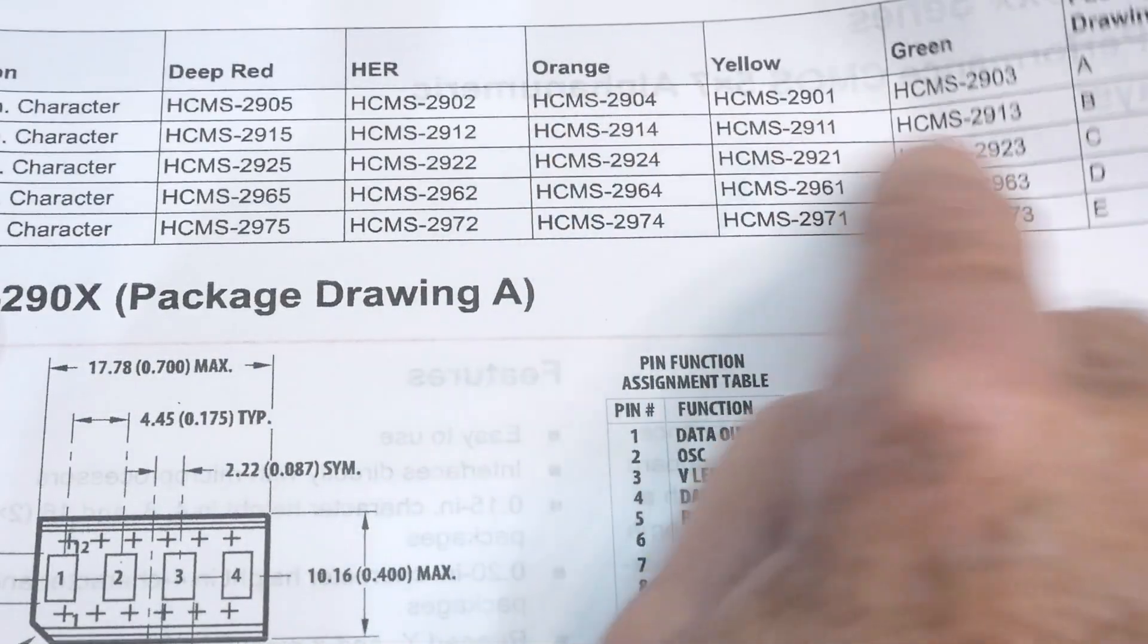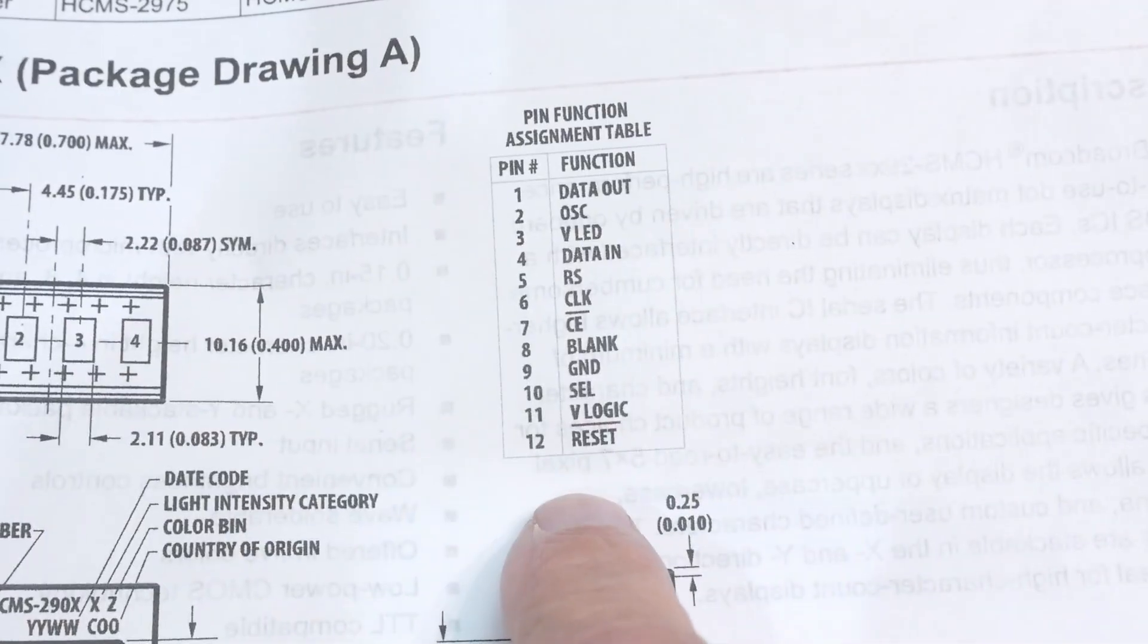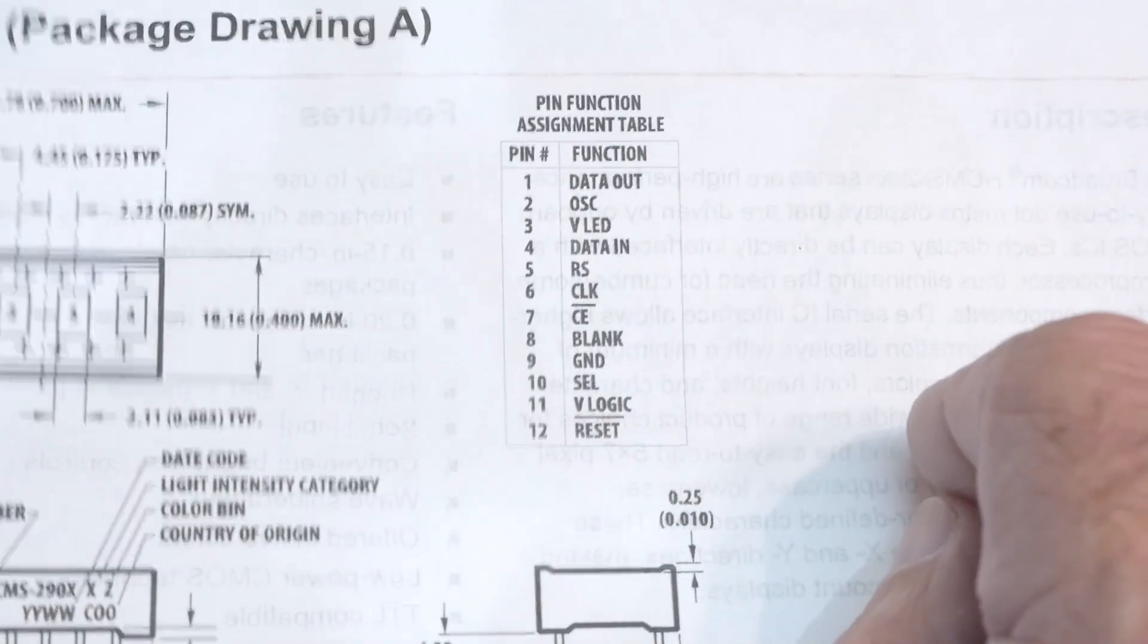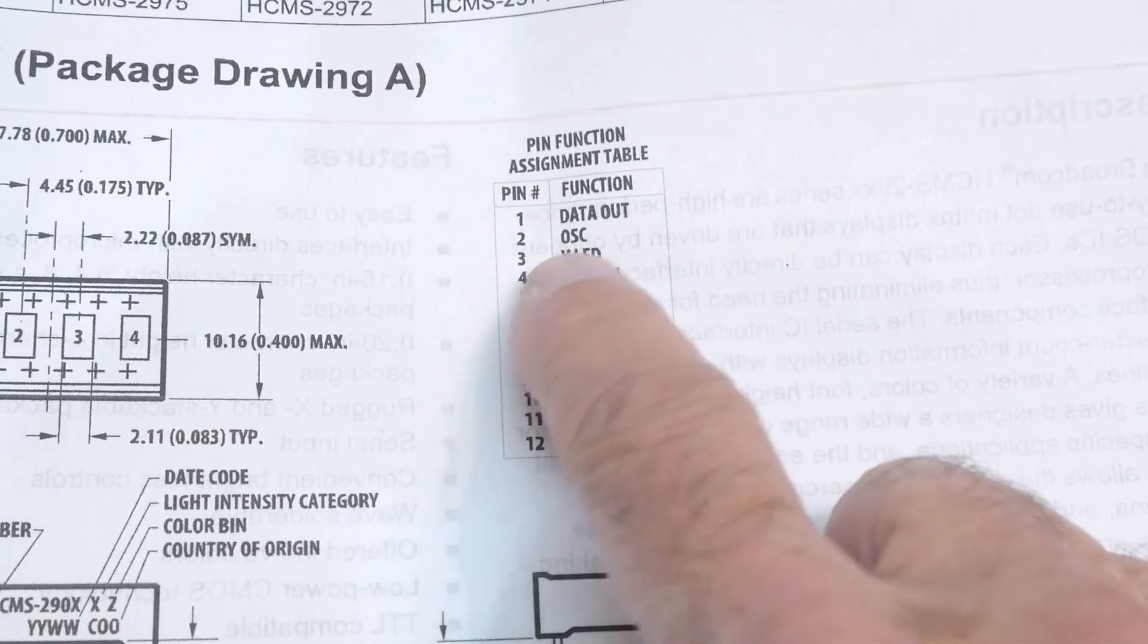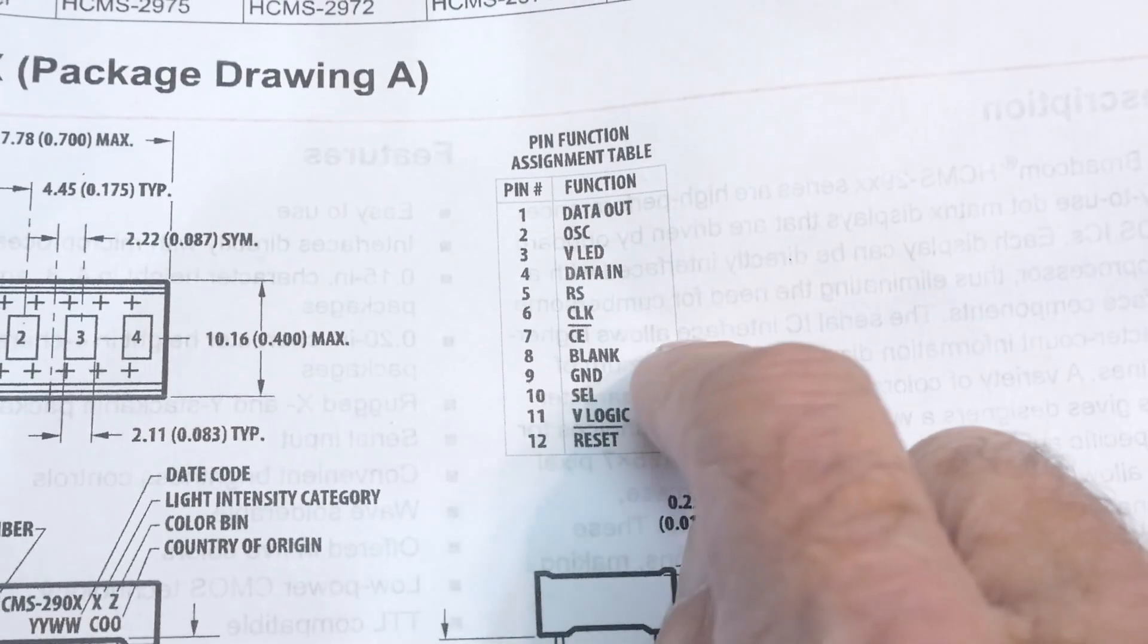And then there's orange, yellow, green. So we have this one here, package A. And it is a 12-pin device. It's serial input, so you can have an external oscillator, but you can have an internal one. So you don't need too many pins.